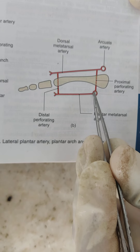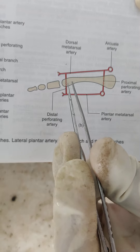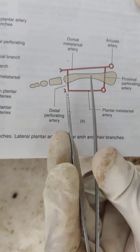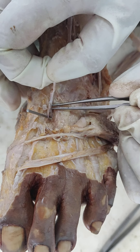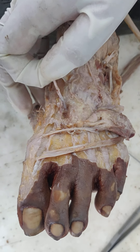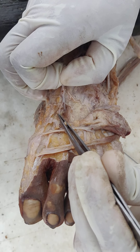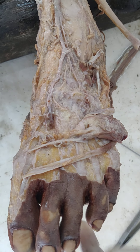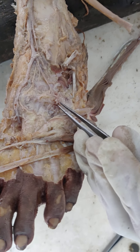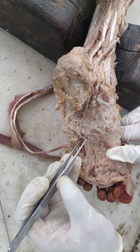Proximally these give proximal perforating branches and distally they give distal perforating branches. These proximal and distal perforating branches are united through the metatarsal spaces — the second, third, and fourth. Into the first metatarsal space the dorsalis pedis artery is directly continuous, giving the first dorsal plantar metatarsal artery, while the second, third, and fourth come from the arcuate artery giving perforating branches.